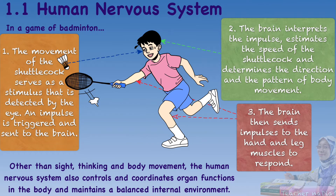This is just an example that shows how the human nervous system works. Other than sight, thinking, and body movement, the human nervous system also controls and coordinates organ functions in the body and maintains a balanced internal environment.